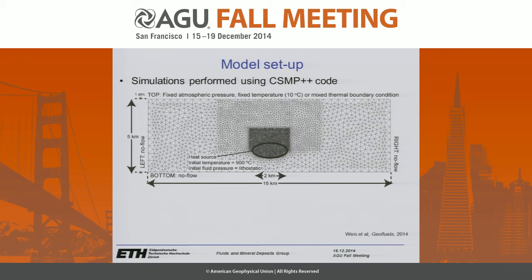We're performing our simulations using the CSMP++ code, which has a control volume finite element approach to solving the governing equations. You can see our finite element mesh showing our domain and the boundary conditions. We model the instantaneous emplacement of an elliptical heat source that's initially two kilometers wide and one kilometer tall, with the top of the heat source at a depth of two and a half kilometers.